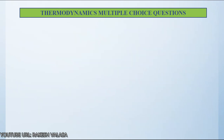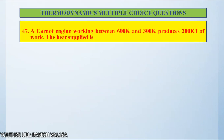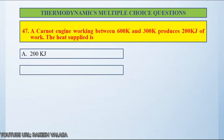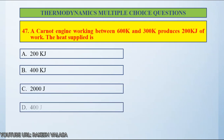Question number 47: A Carnot engine working between 600 Kelvin and 300 Kelvin produces 200 kJ of work. The heat supplied is — Option A: 200 kJ, Option B: 400 kJ, Option C: 2000 kJ, Option D: 400 kJ.